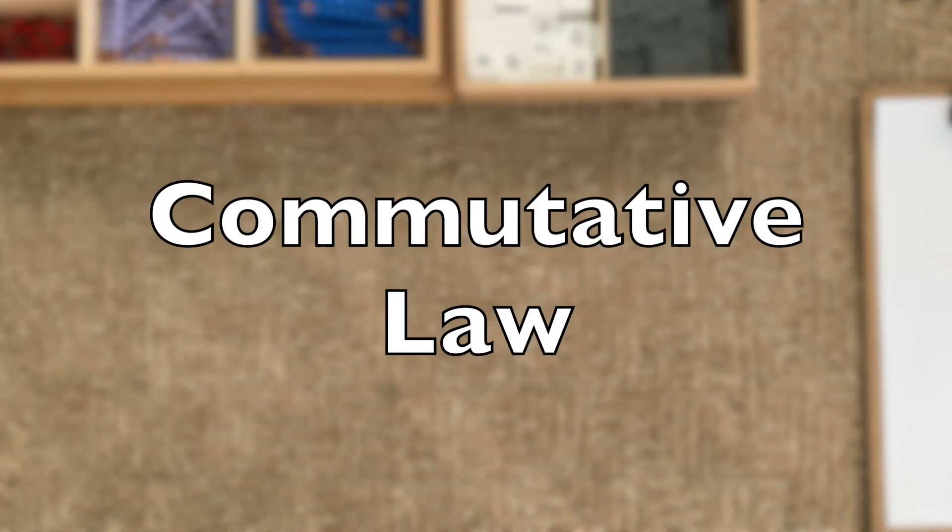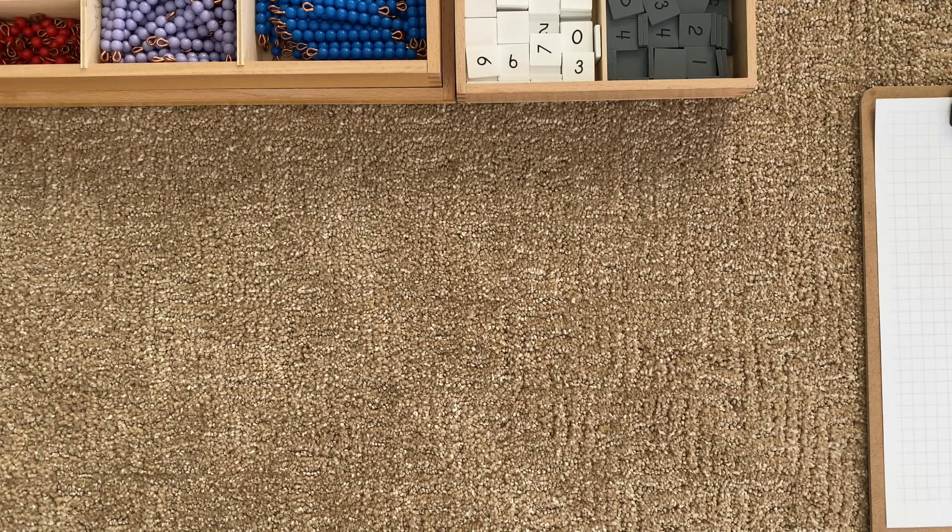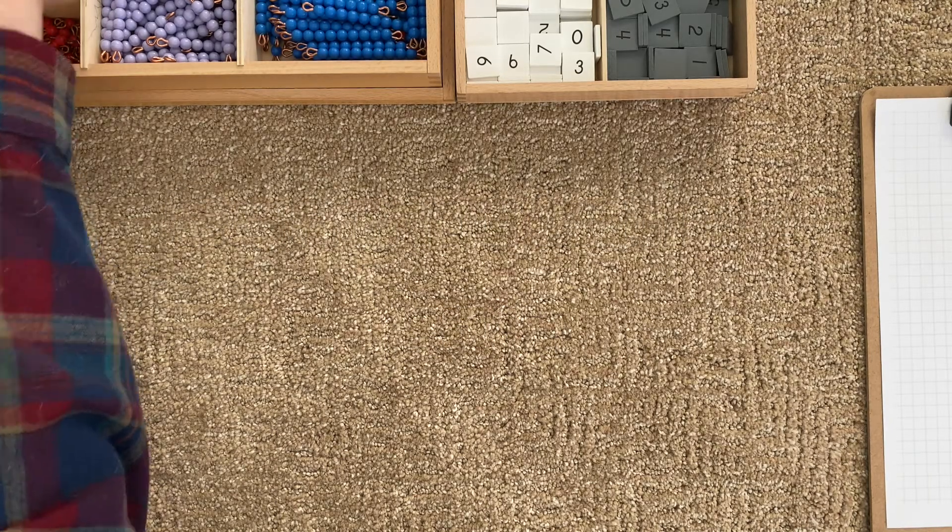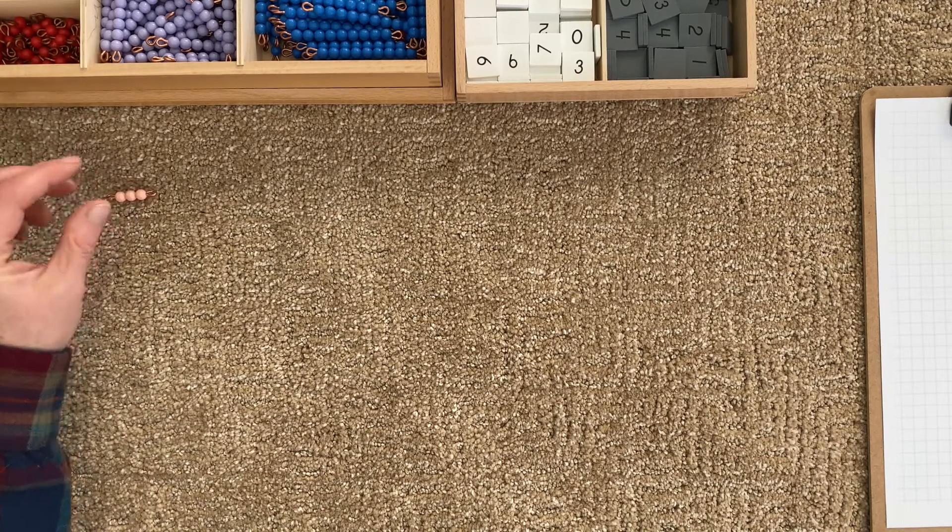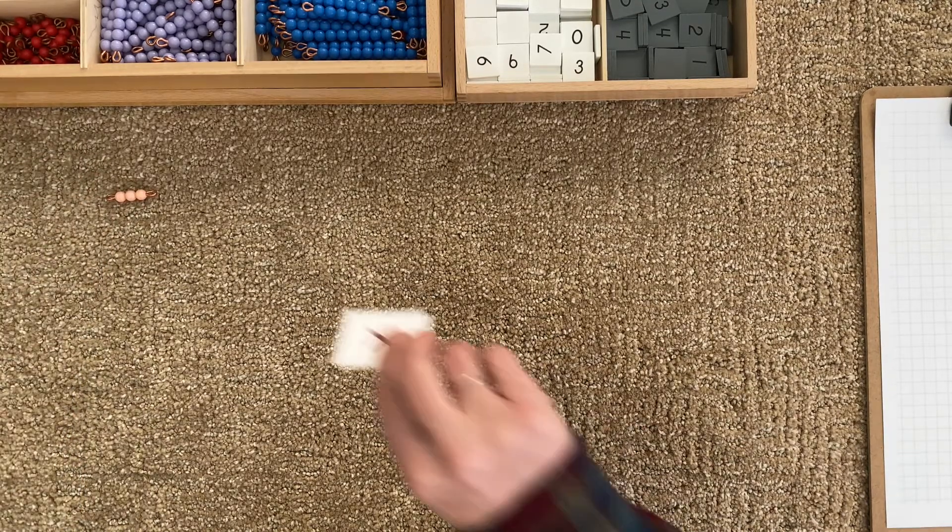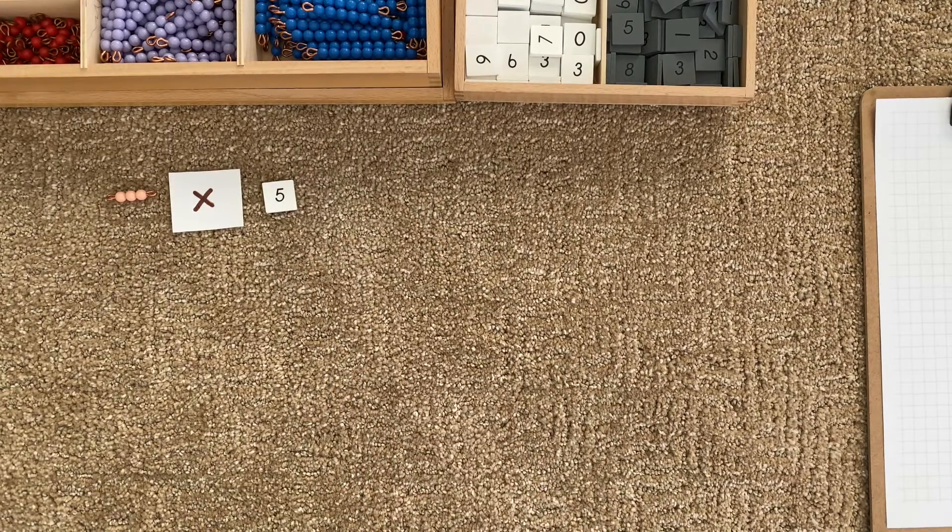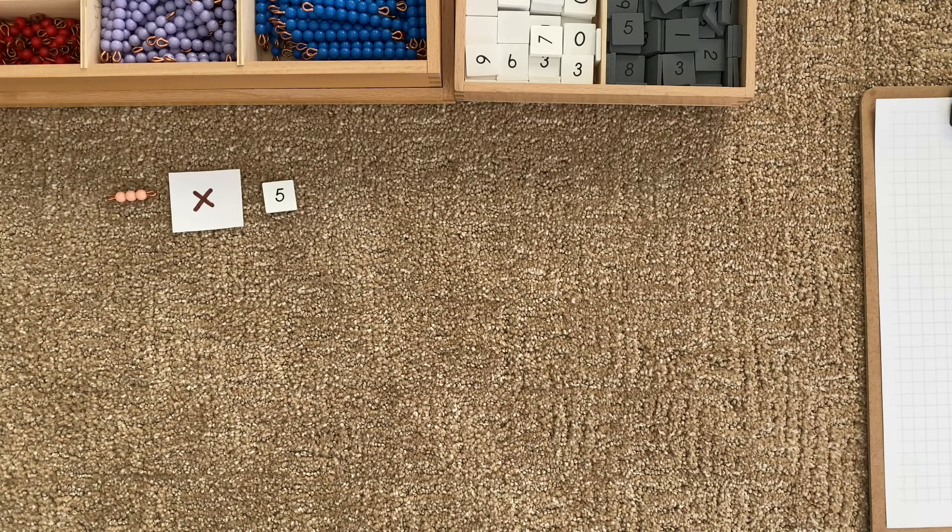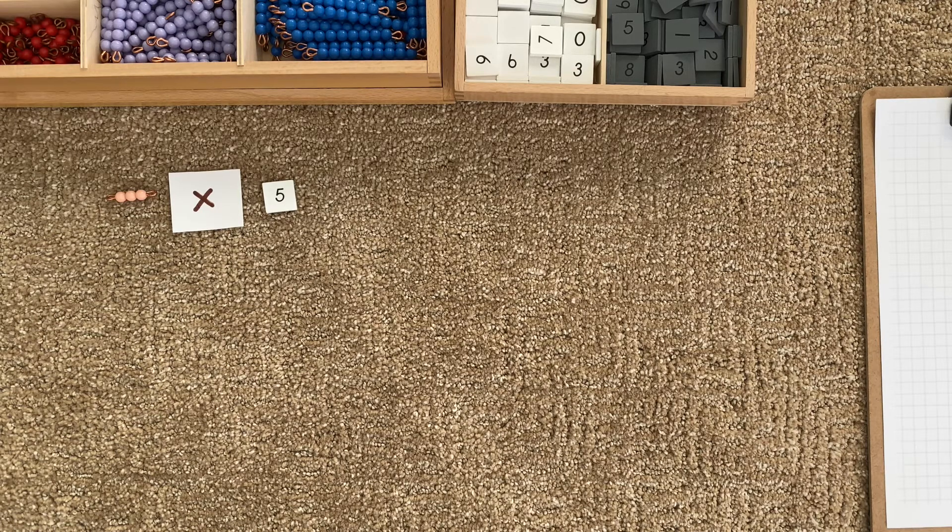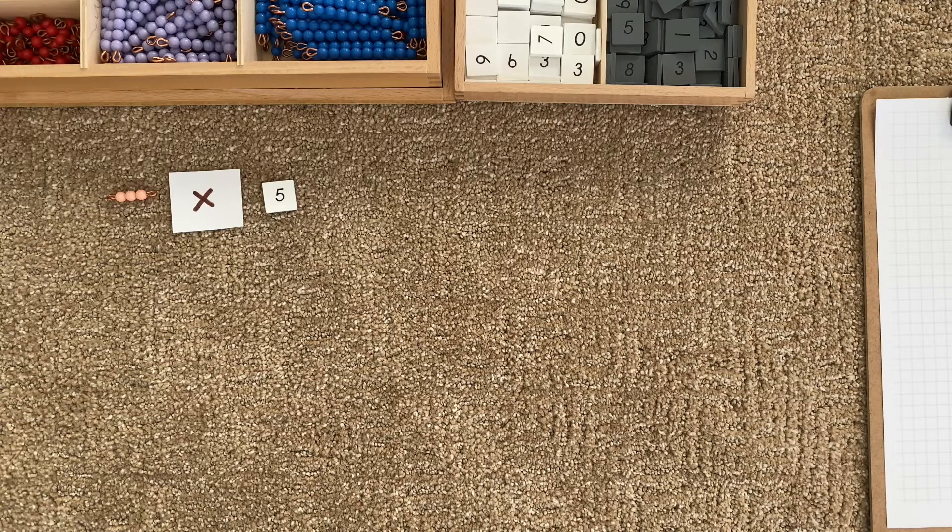Welcome to a new lesson. Today I want to show you something about multiplication. Let's start by taking a three bar and multiplying it by five. I also want to make a point that when we have a multiplier, we tend to use the gray tiles, but I'd like you to be able to see them better. So I'm using the white tiles.